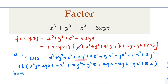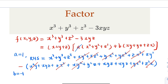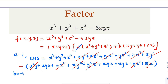If b is negative 1, let's verify the cancellations. The xy squared terms cancel, the xz squared terms cancel, the yx squared terms cancel, the yz squared terms cancel, the zx squared terms cancel, and the zy squared terms cancel. What is left are the cubic terms and the three xyz terms, which match the left-hand side exactly.